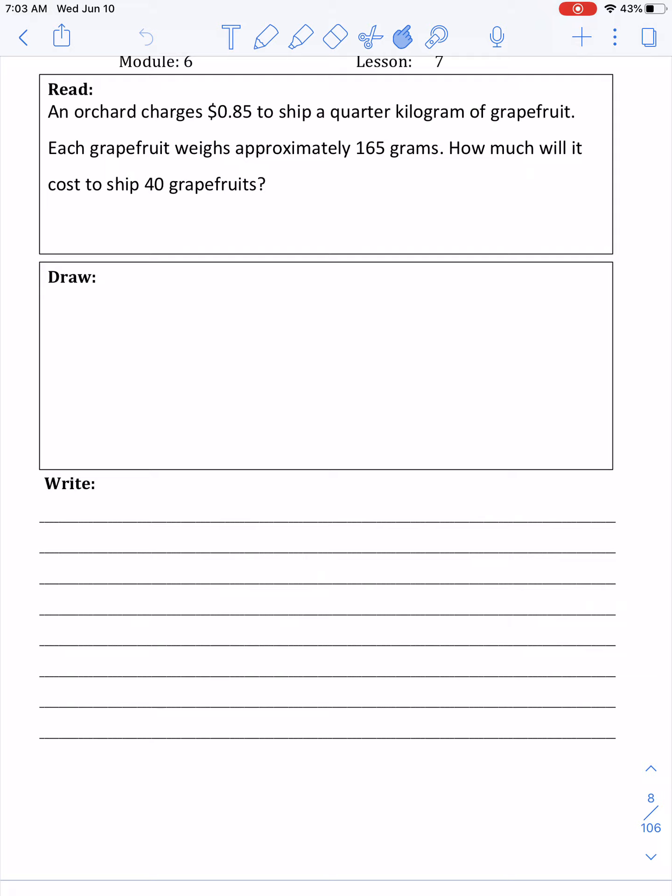An orchard charges 85 cents to ship a quarter kilogram of grapefruit. Each grapefruit weighs approximately 165 grams. How much will it cost to ship 40 grapefruits?